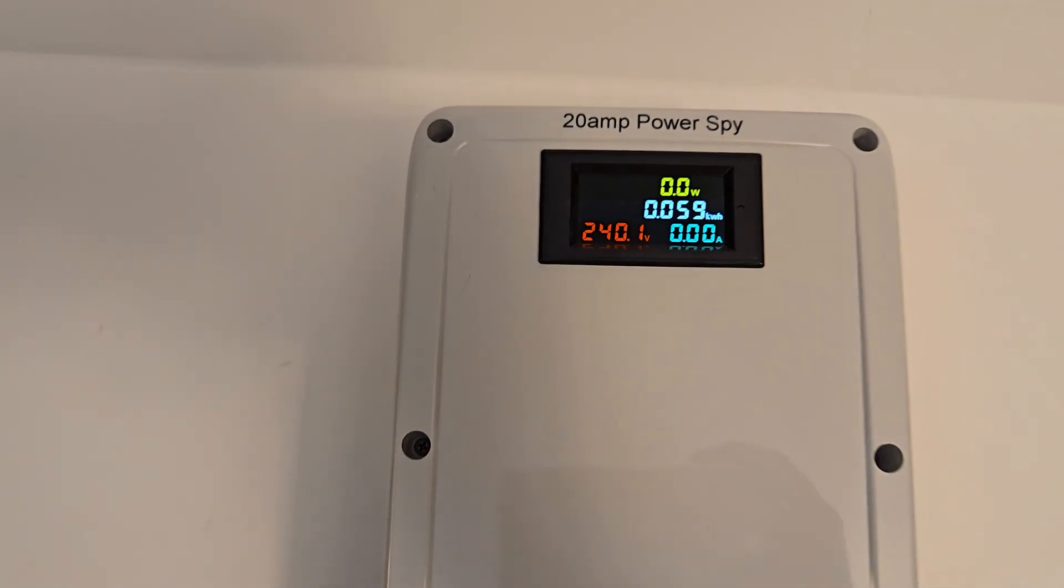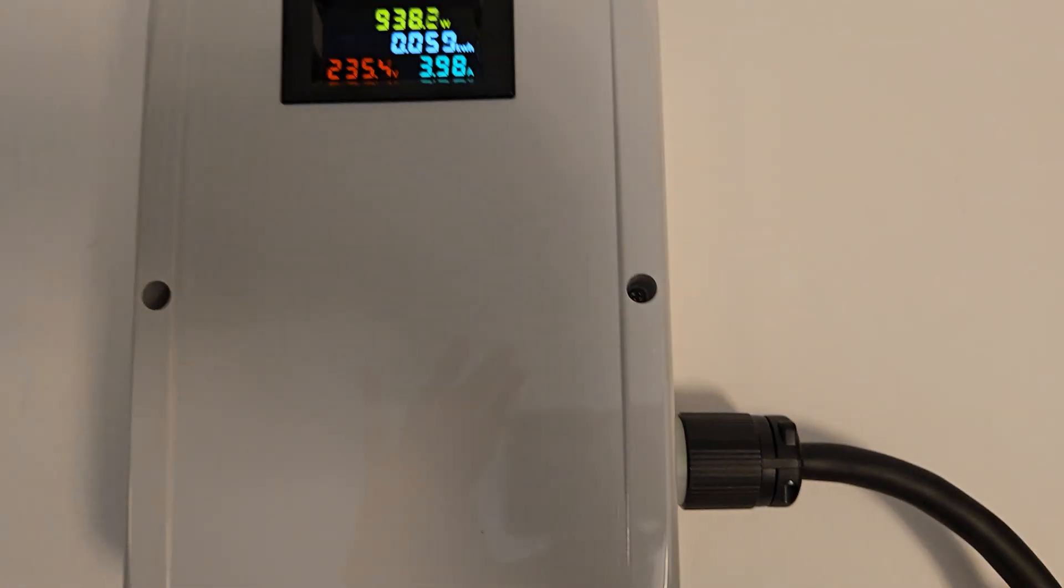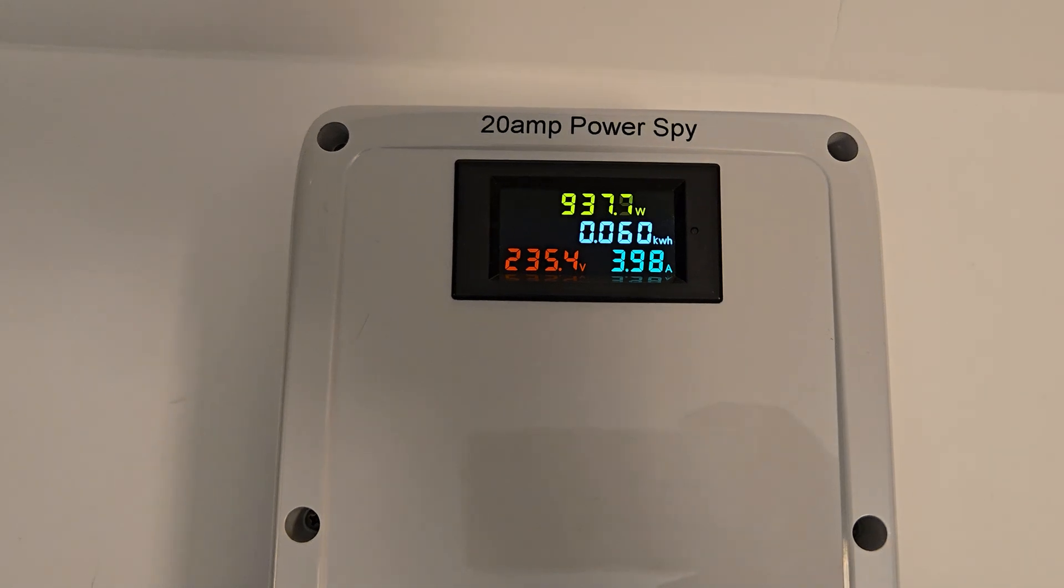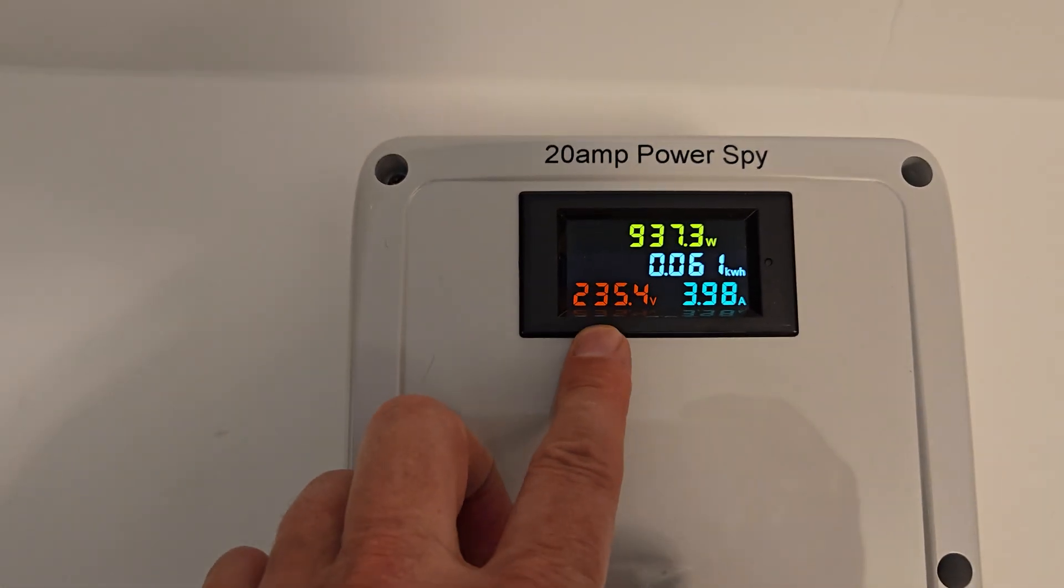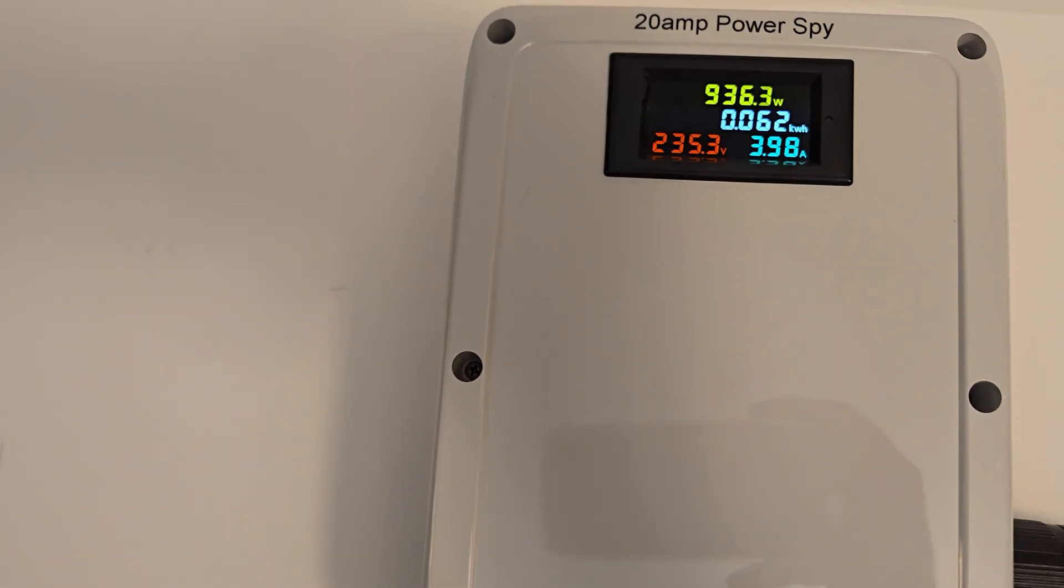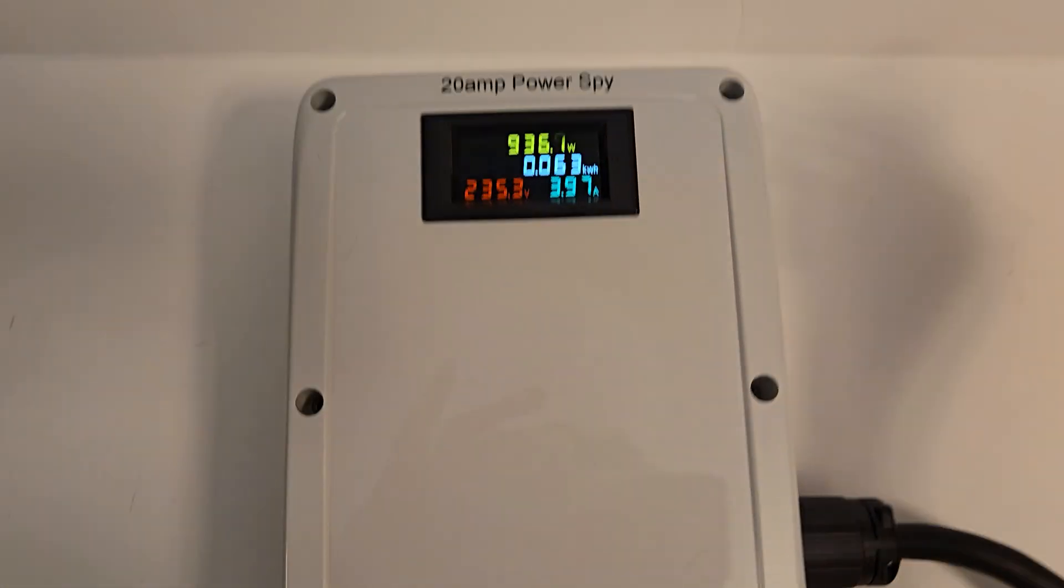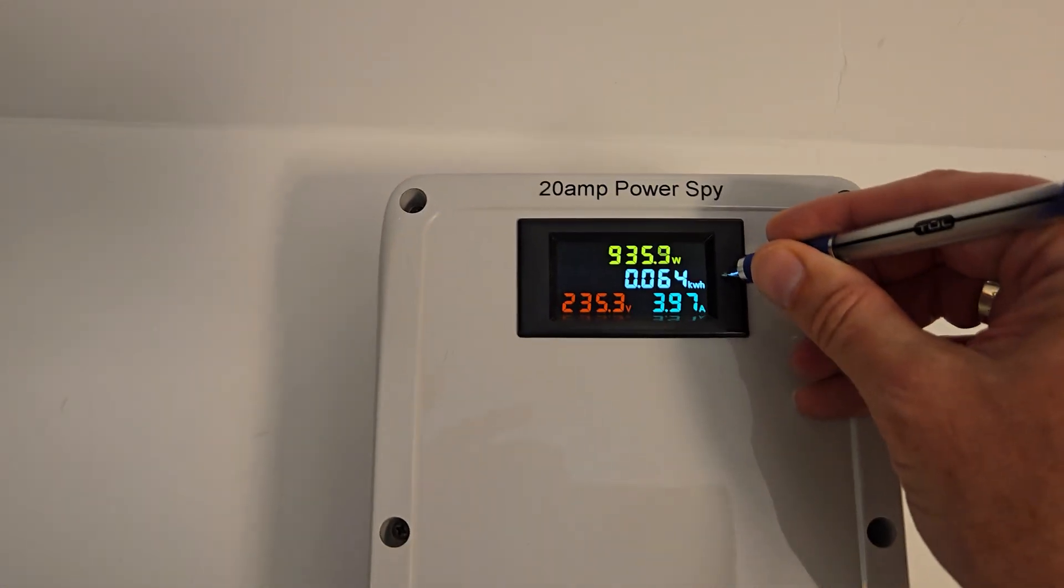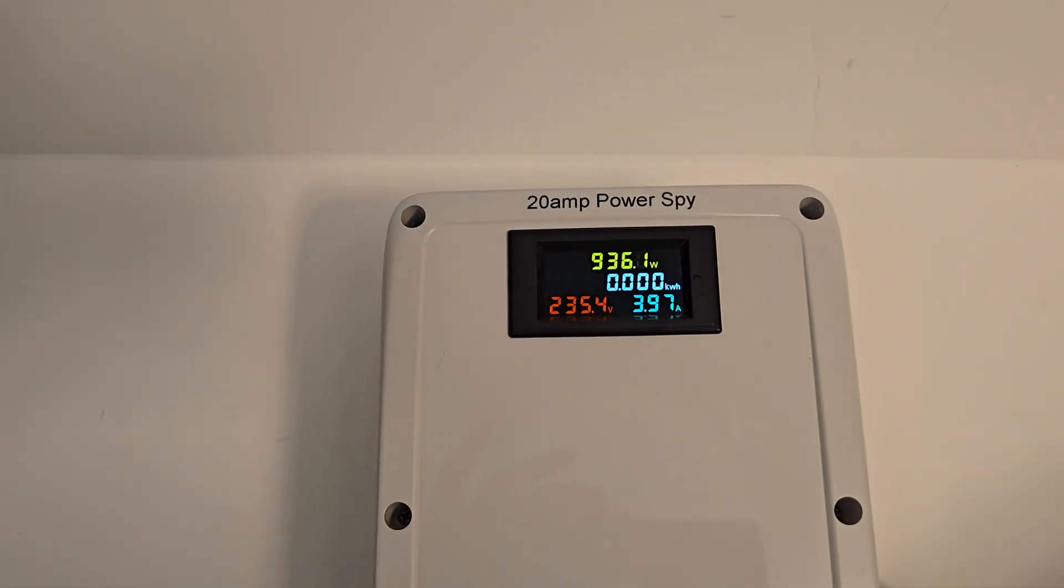I'm going to go ahead and put a 4 amp 240 volt load on this. And we're drawing a little under a thousand watts. So the meter will multiply the volts times the amps to give you the wattage. And then it will even accumulate kilowatt hours over time. This is very easily reset with a ballpoint pen, and the kilowatt hours are retained between power outages.